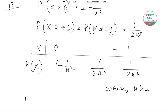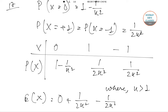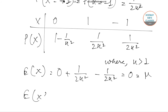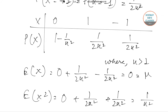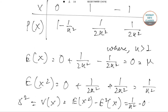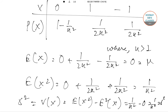E(x) = 0 + 1/(2k²) − 1/(2k²) = 0, so μ = 0. E(x²) = 0 + 1/(2k²) + 1/(2k²) = 1/k². Then σ² = V(x) = E(x²) − [E(x)]² = 1/k² − 0 = 1/k². Therefore σ = 1/k.